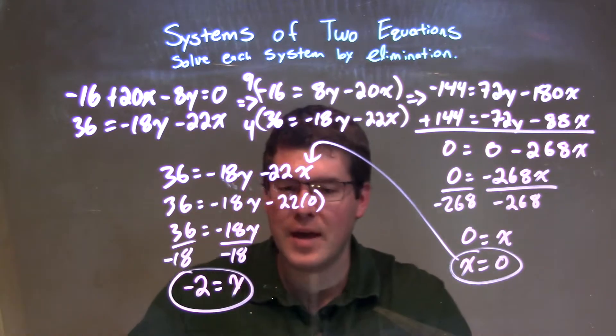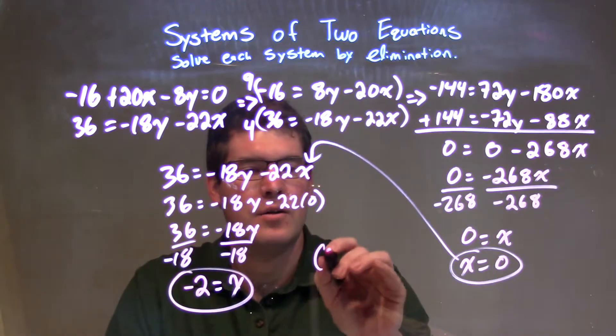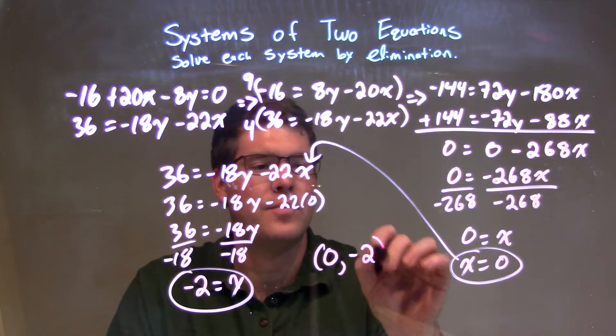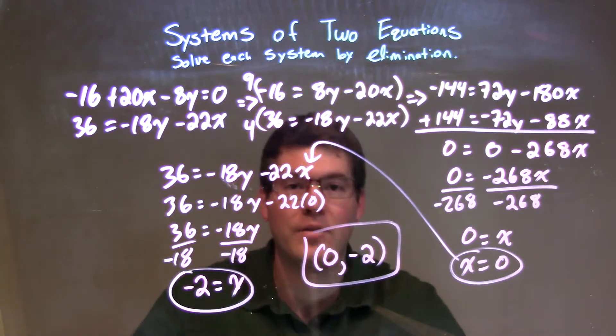So, we have y equals negative 2, x equals 0. Our coordinate point here is 0, negative 2. And that's our final answer.